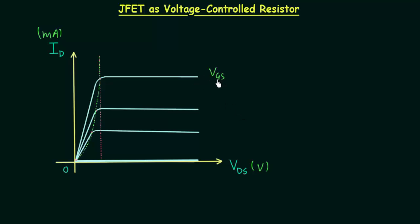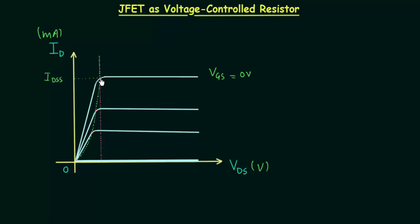The input voltage is VGS — it is the controlling voltage. The first curve is obtained when VGS is equal to 0 volts. When VGS equals 0V and VDS is greater than the pinch-off voltage, current ID becomes constant. This point on the curve is where pinch-off is happening, and the corresponding x-coordinate is the pinch-off voltage of the JFET.